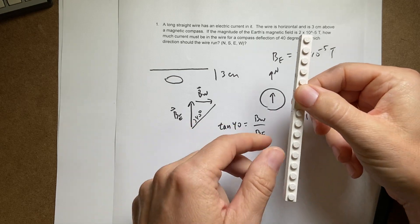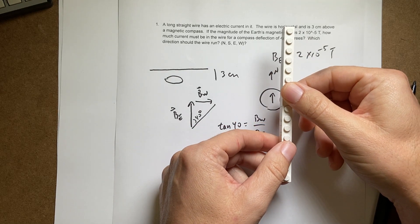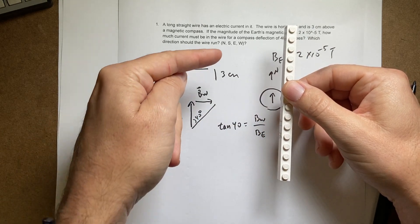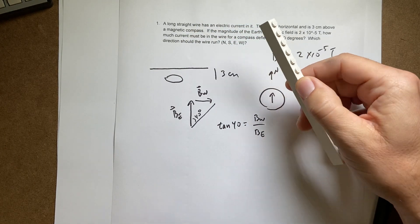Then the magnetic field due to the wire would be pointing that way. Okay. So for my situation I'm going to have a north south wire. And I'm going to have the current running south.